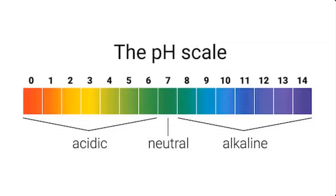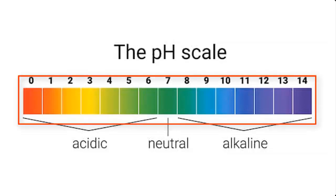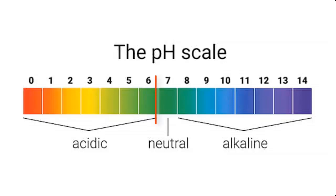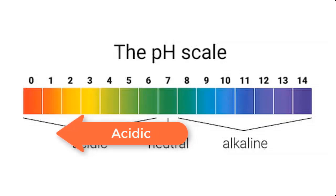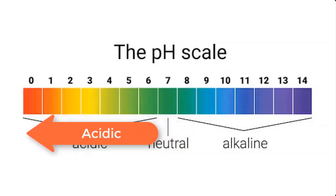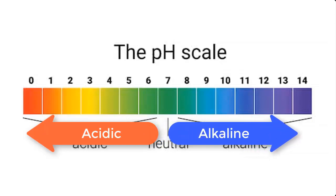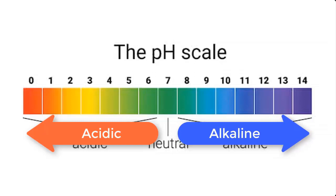An example of a neutral solution is water. pH is expressed on a number scale ranging from 0 to 14. 0 to 6 is the acidic part of the scale and 8 to 14 is the alkaline part of the scale, while 7 stands for neutral. Acidity increases from 6 to 0, meaning 0 is more acidic than 1, and 1 is more acidic than 2. On the other hand, 8 is less alkaline than 9, and 9 is less alkaline than 10. In summary, 8 is least alkaline while 14 is most alkaline.